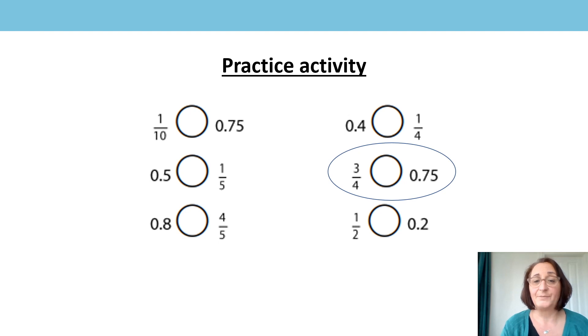So I started here with 3 quarters and 0.75 and I know that 0.75 is equal to or the same as 3 quarters so I could just put my equal sign in here. The next one I went to was the first one and I could use my knowledge of 0.75 again of 3 quarters and I know that 3 quarters is greater than 1 tenth so 1 tenth is less than 0.75. The next one I went to uses a half and I know a half is 0.5 so I know that 0.5 is greater than 0.2 so I could put my greater than sign in that time.